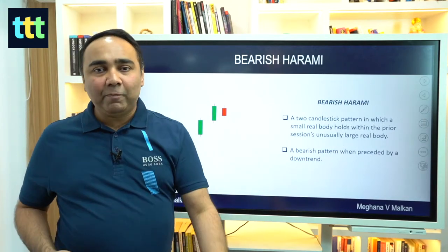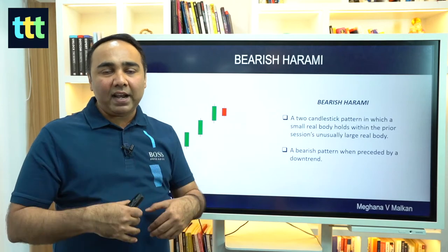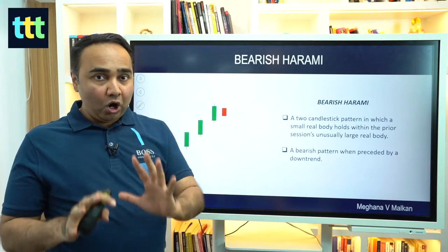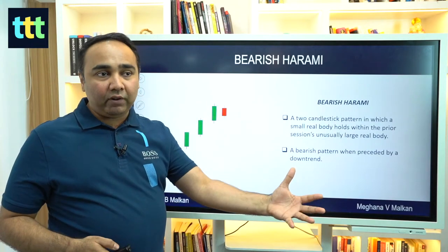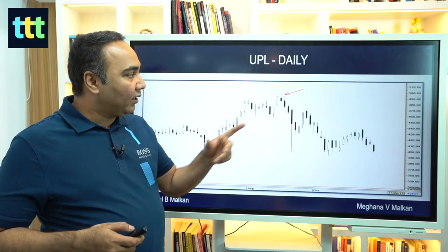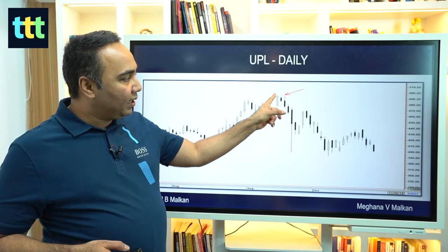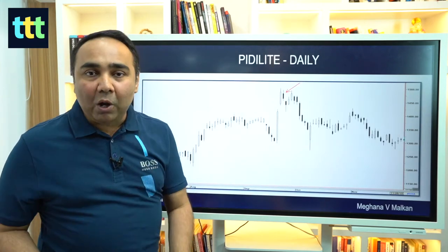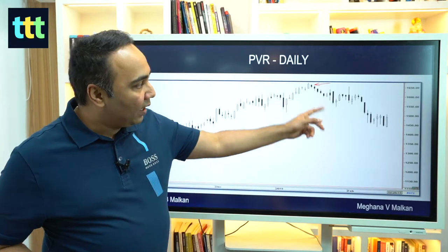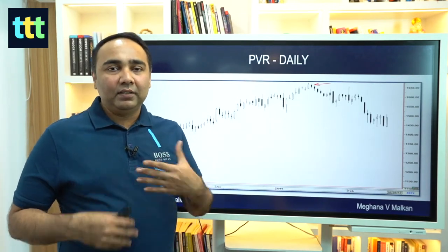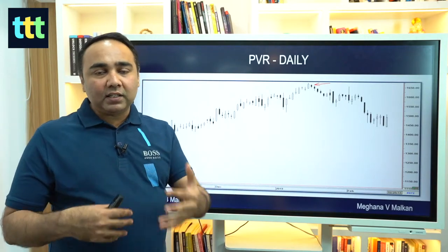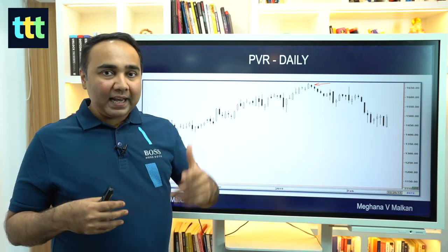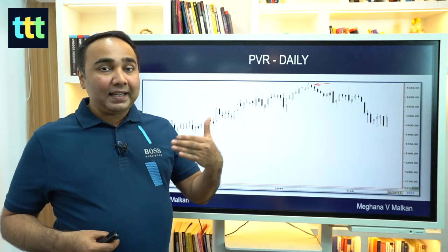Every pattern has a reverse pattern, so there is also a Bearish Harami. After an uptrend, you see a small candle inside a larger candle — the uptrend is halted and it's not going further. You need confirmation: after a strong bullish trend, the trend halts and you can take a short trade or exit your long trades. Practice is key — take one pattern, go to the charts, and find at least five to ten examples so your eye gets tuned to it, then start back-testing.